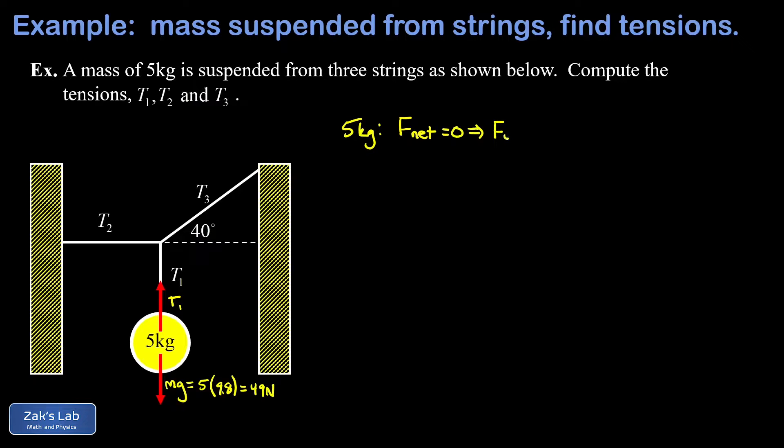Now there are no forces pointing left or right so I'm not going to bother with that part. All the forces pointing up, that's just T1. Forces pointing down, that's mg, and we figured out mg is equal to 49 newtons. So we have our tension in the first string.